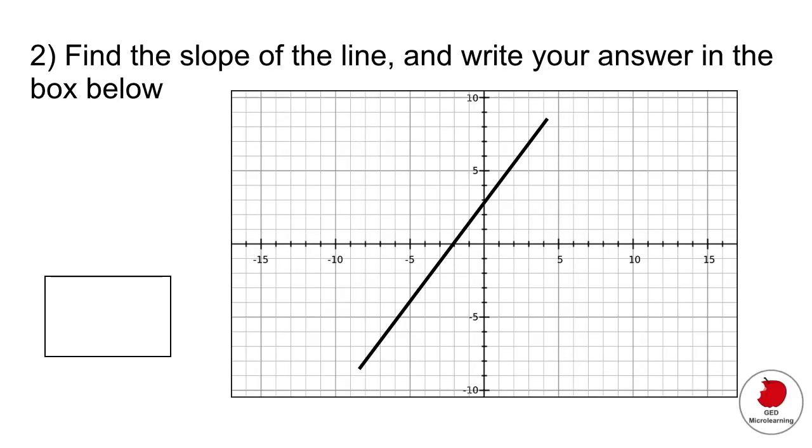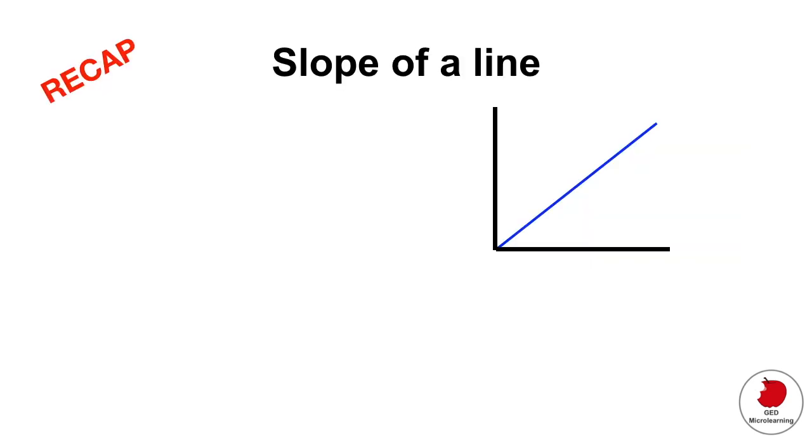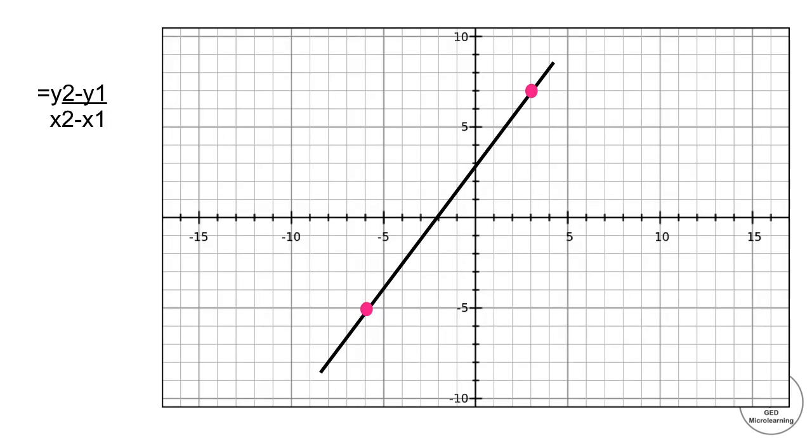Question 2 is also a slope problem but it involves you actually looking at the graph, analyzing it and then working out the slope of the line. Remember that the slope of a line is actually how steep a line is. Another way to talk about it is what we call the rise over the run, meaning the height or the steepness of that line. And the run refers to the inclination horizontally. Mathematically we represent it with this equation. So if we wanted to find the slope of this line all you have to do is choose any two points.